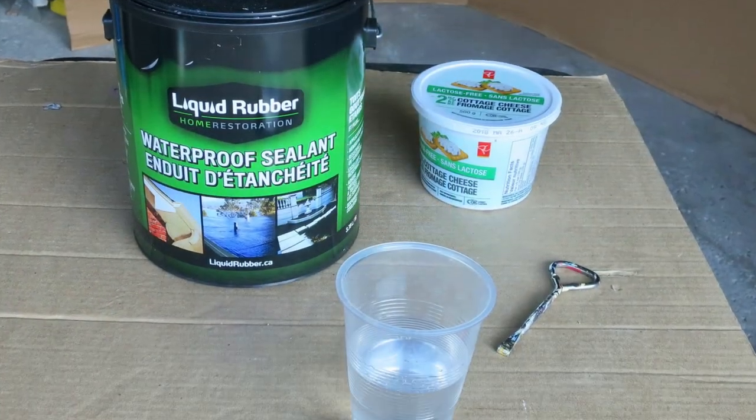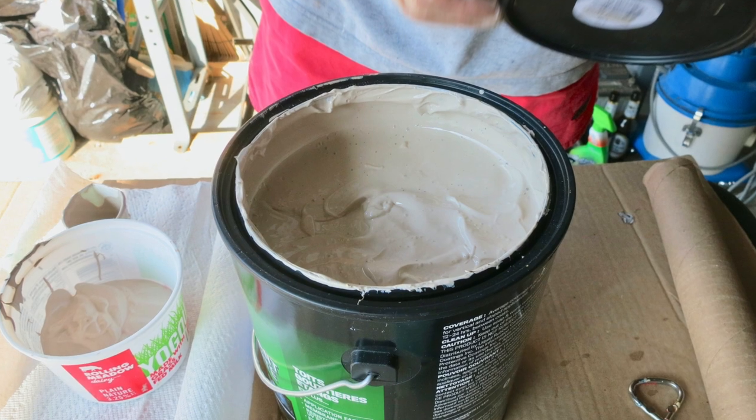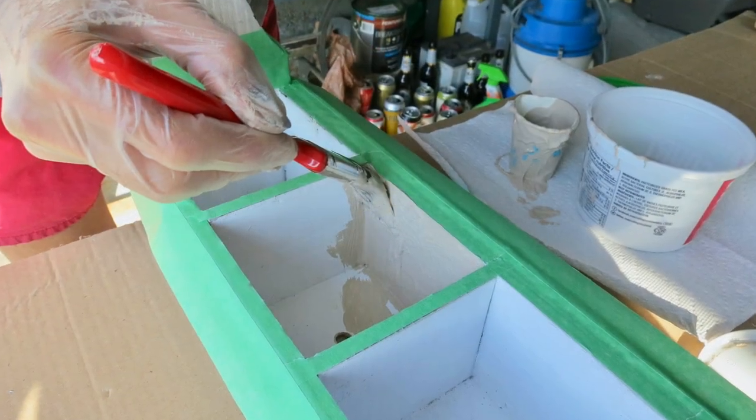Keep some water handy to dip the brush into right after use because liquid rubber is water-based and you can save your brush that way. Brush on one or two coats according to the package directions and then remove the tape.